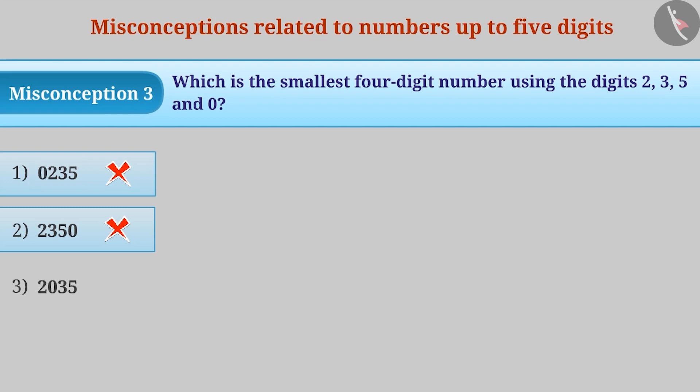The correct understanding is that a number cannot begin with 0, so it should be written after the smallest non-zero number. With this understanding, the correct answer is 2, 0, 3, 5.